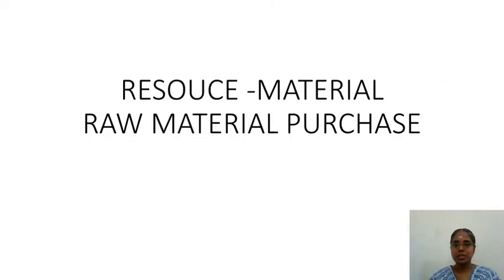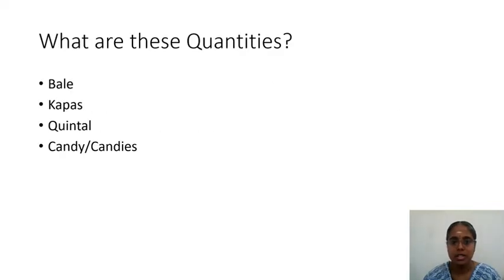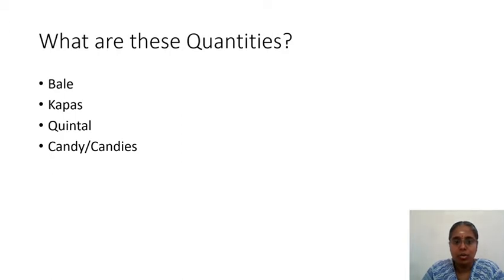For production you need material as a resource. The first input for producing yarn is raw material. To understand costing, we need to know certain terms. A spinning mill owner or person involved in spinning will need to know what these terms mean. The various terms are: bale, kapas, quintal, and candy.